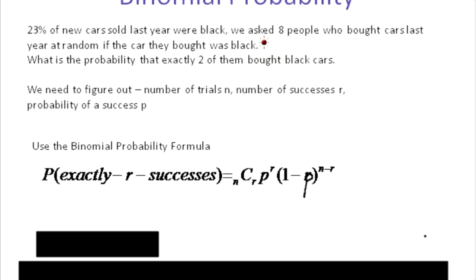We have to think about whether it fits the model of binomial probability. Do we have a number of trials? Do we have a number of successes? And do we have the probability of a success? Eight people bought cars last year. We want to know how many bought black cars. Let's think about black cars being a success and anything but a black car being a failure — those would be complementary events. What's our N going to be?